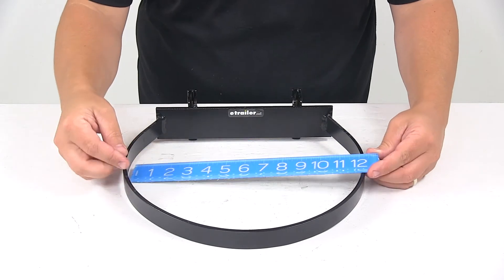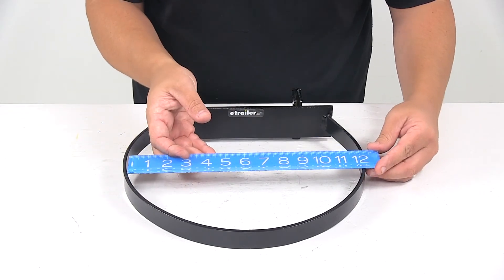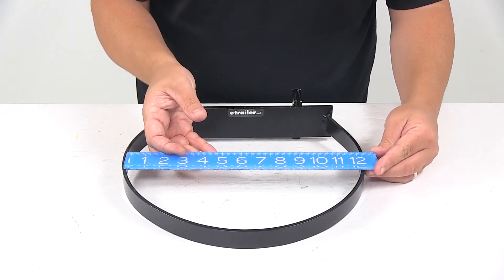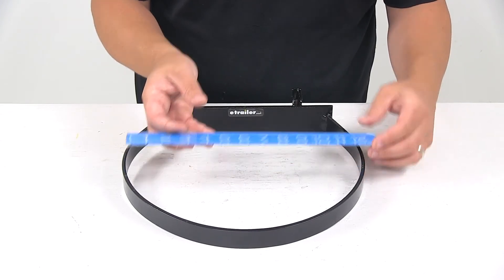Measuring inside edge to inside edge, going this direction, gives a measurement of about 12 and 3 sixteenths to 12 and a quarter.